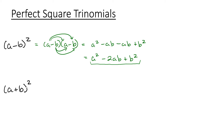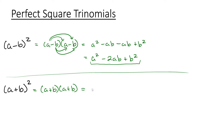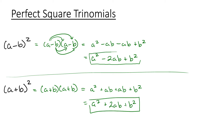Now we'll talk about what the square of a sum looks like. Same thing, if we have a plus b, that gives us a plus b times a plus b. So if you see polynomials of this form, they're easily factorable into a minus b squared or a plus b squared. Note these polynomials can also all be factored using the AC method — you don't need to immediately recognize them as perfect square trinomials, but sometimes it can make your life easier.